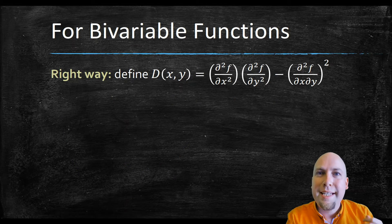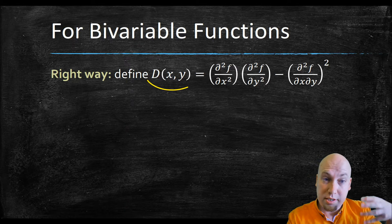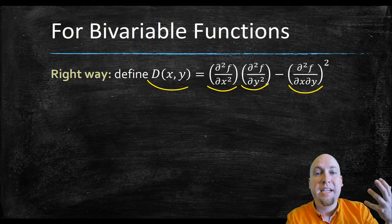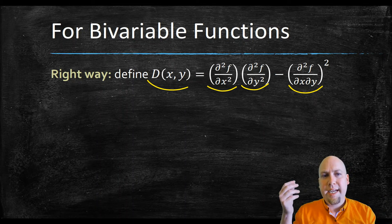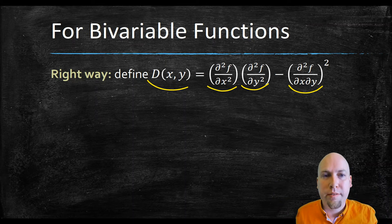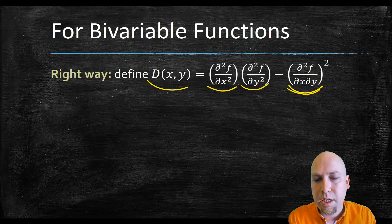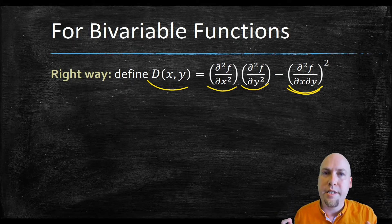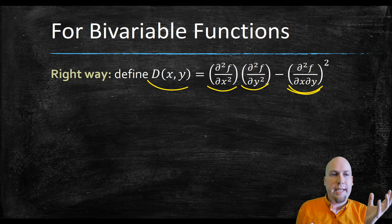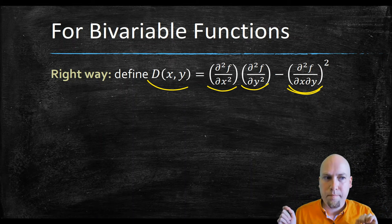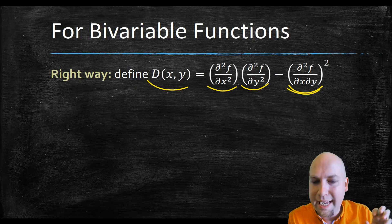To answer this, we introduce a new function called D. It's a function of two variables, and you construct it by taking the second x partial, multiplying by the second y partial, and subtracting off the square of the mixed partial derivative. Remember, it doesn't matter if you take the x partial then y, or y then x — those two mixed derivatives are equal for most functions, as long as the second partial derivatives are continuous. This function D measures uniformity in concavity — how much the concavity is the same in every direction, either always concave up or always concave down.